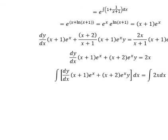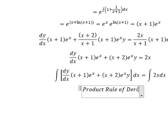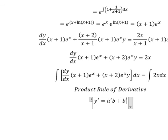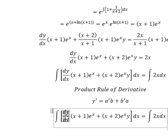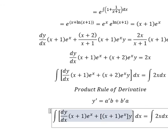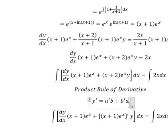Now we put the integration for both sides. We can apply the product rule of the derivative: the first derivative of a multiplied by b, plus the first derivative of b multiplied by a. So the integration of this one gives us s plus one, and the integration of this one gives us y equals a times b.